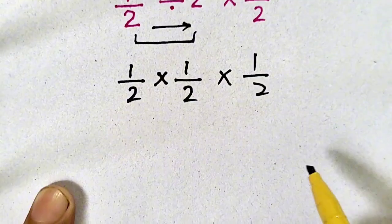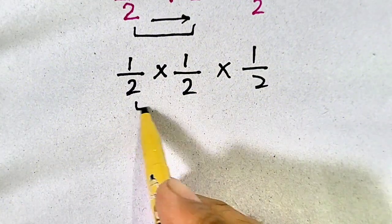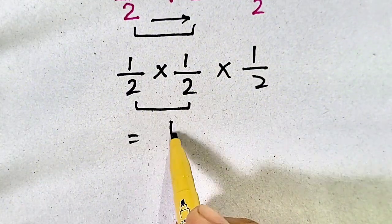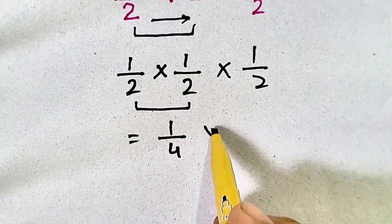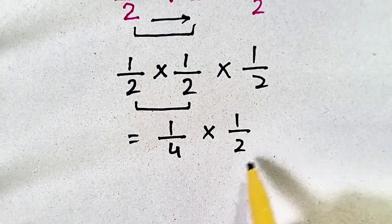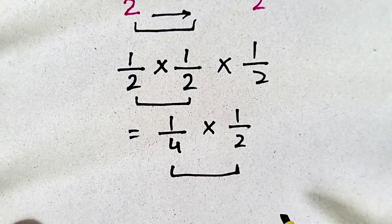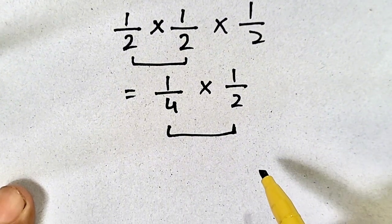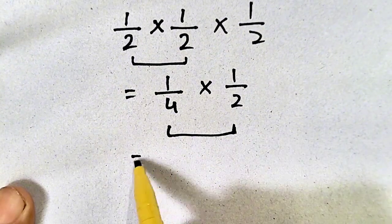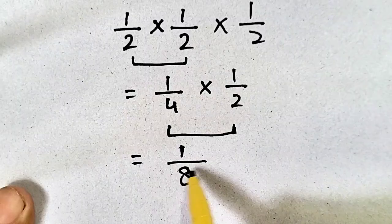Now, 1/2 times 1/2 will be equal to 1/4, and we have 1/2. So, 1/4 times 1/2, it will be equal to 1/8.